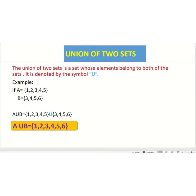In the union set we would unite or combine the elements of set A and set B. So A union B is equals to 1, 2, 3, 4, 5 and 6. The common elements such as 3, 4 and 5 of set A and set B are just written once.